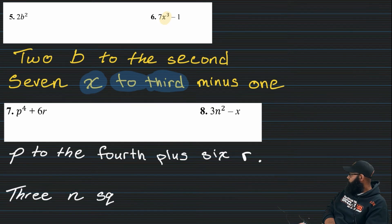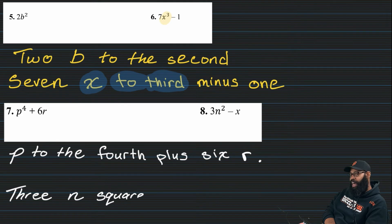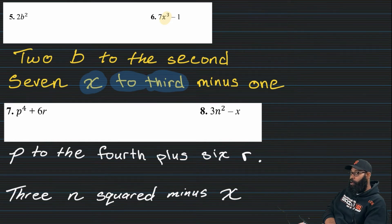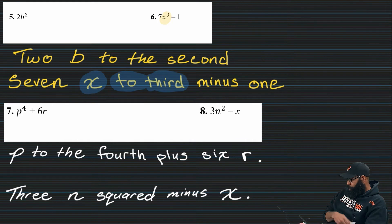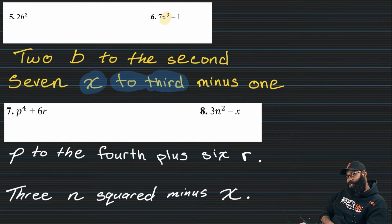And our last one. Three N squared minus X. And I think that's going to take care of part one of the handout. So it's going to get a little bit more challenging. And I hope as it does get more challenging, it gets a little bit more enjoyable.